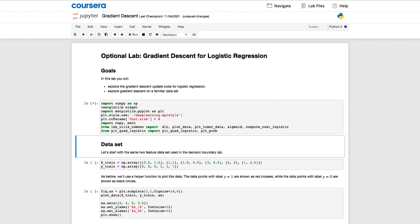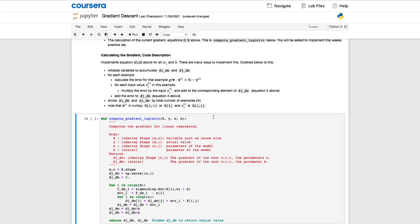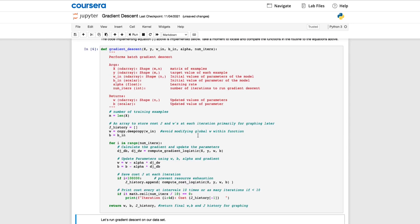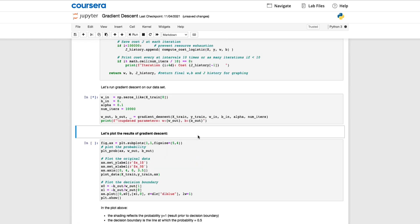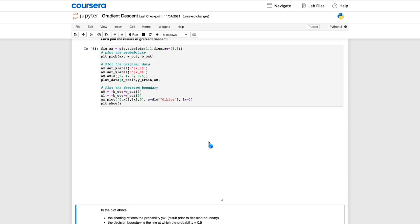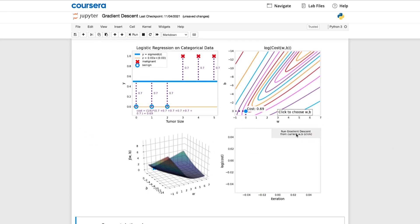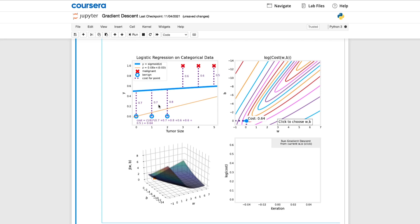In the upcoming optional lab, you'll also see how the gradient for logistic regression can be calculated in code. This will be useful to look at because you'll also implement this in the practice lab at the end of this week. After you run gradient descent in this lab, there'll be a nice set of animated plots that show gradient descent in action. You'll see the sigmoid function, the contour plot of the cost, the 3D surface plot of the cost, and the learning curve all evolve as gradient descent runs.